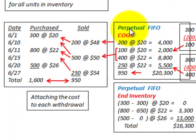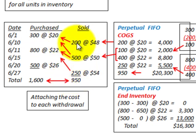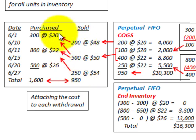Now let's look at the perpetual FIFO method. This is where we attach the cost of each withdrawal to the inventory amount we're using. In this case, we have to look at each sale individually — the 200, the 500, and the 250 units — totaling 950 units sold. We have to account for our cost based on each of the withdrawals or sales made.